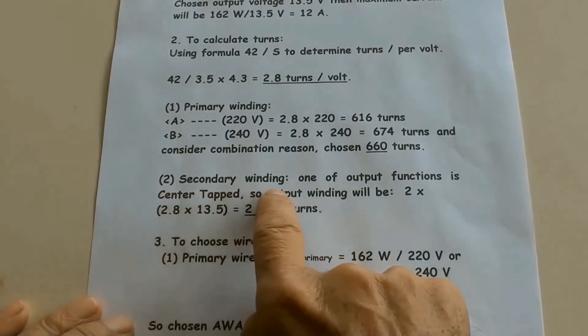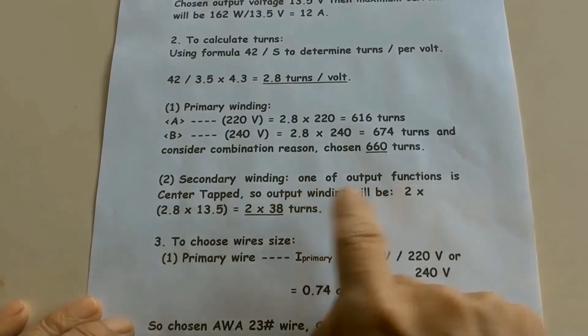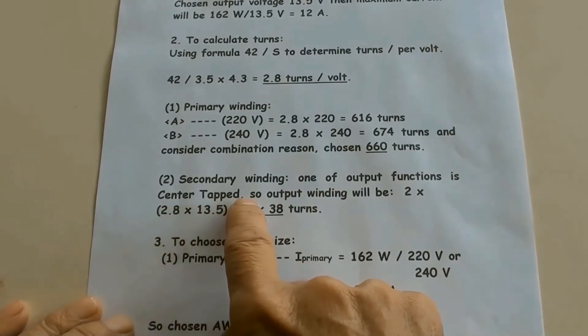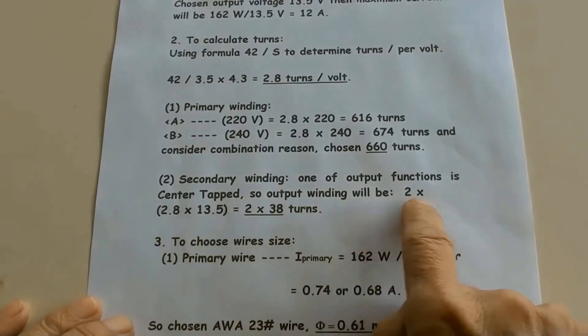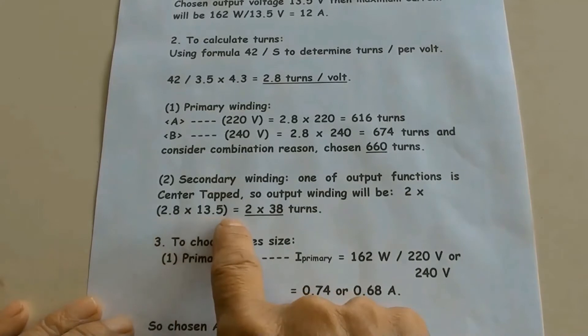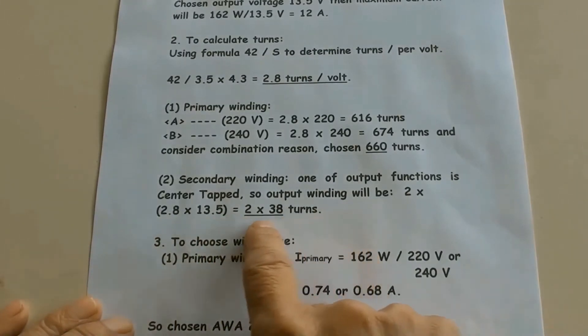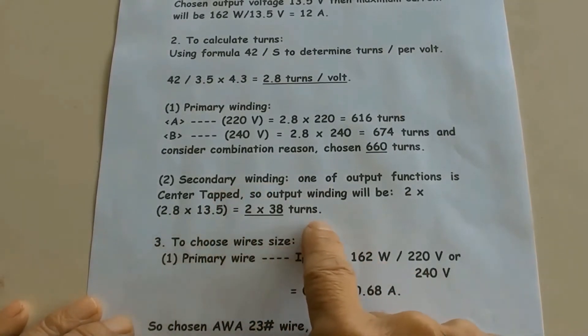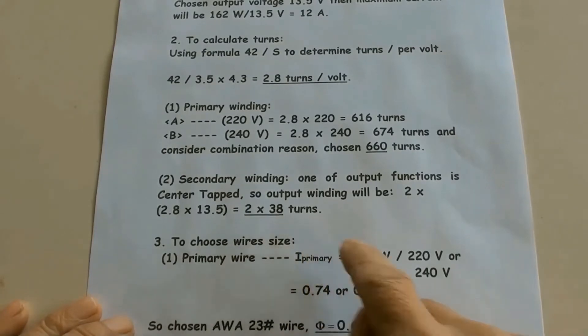Secondary winding. One of output functions is center tapped, so output winding will be 2 times 2.8 times 13.5 equals 2 times 38 turns.